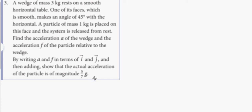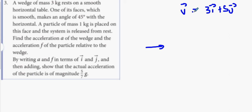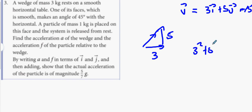Just to explain what i and j means: imagine I have a velocity 3i plus 5j. That basically means I go 3 meters to the right and 5 meters up every second. The magnitude would be the square root of 3 squared plus 5 squared, which is root 34. So root 34 would be my magnitude. That's what i and j means in the context of this question.